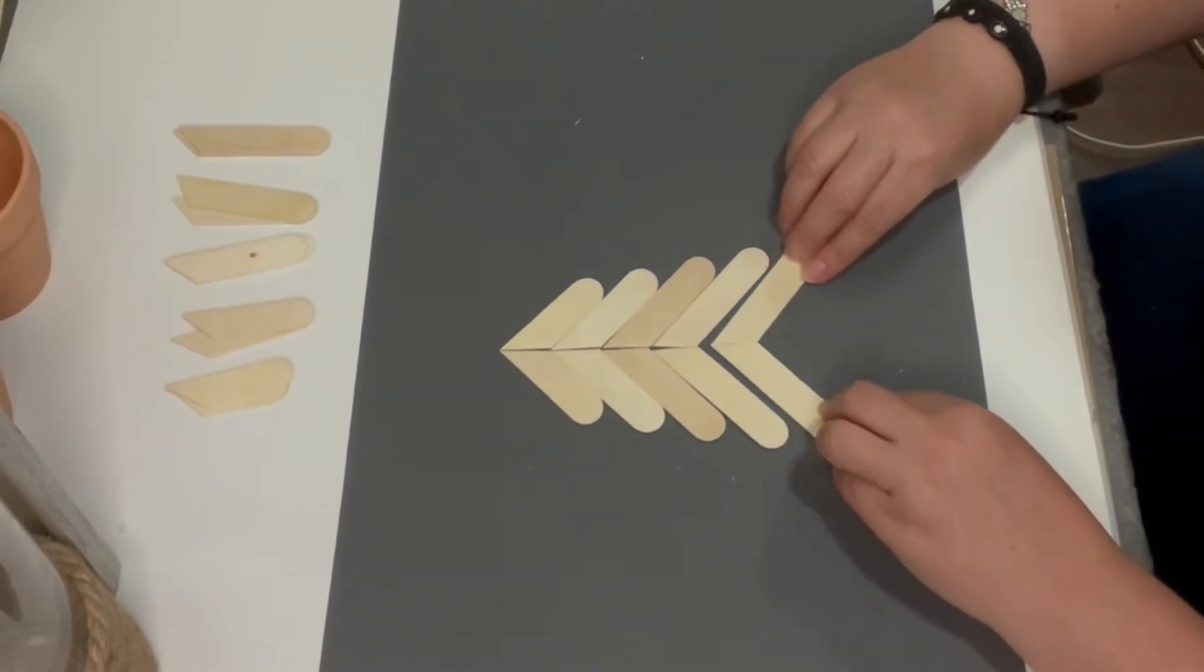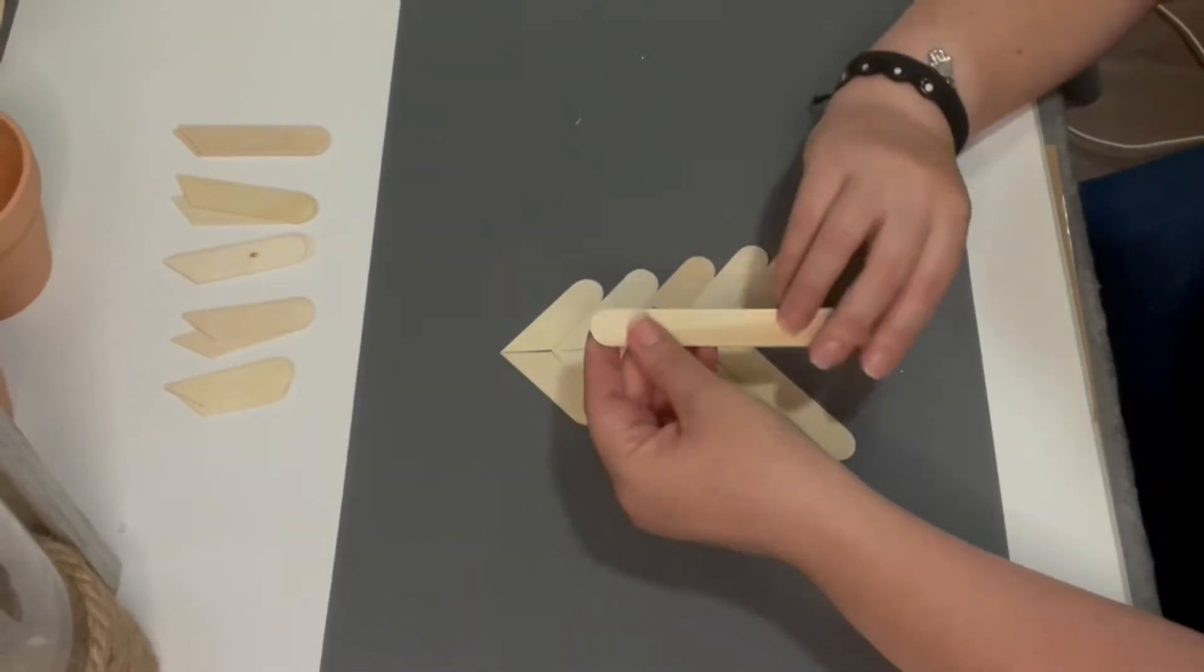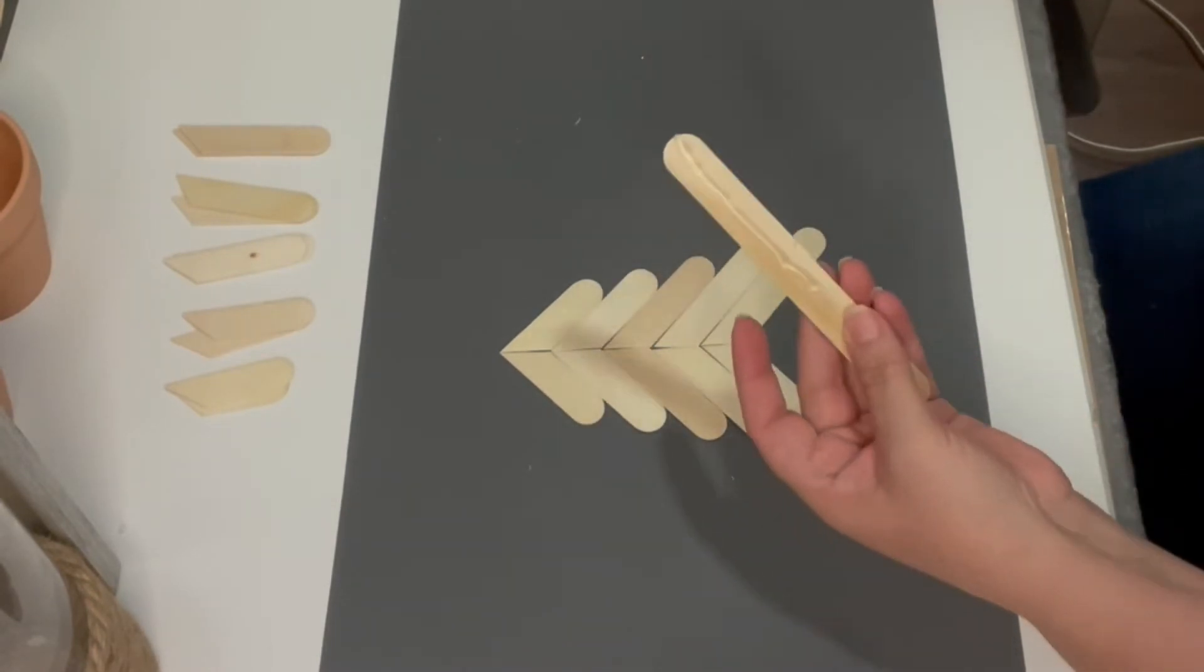To glue the tree as is, I used another popsicle stick. I added a generous amount of glue and then just laid it over the slits, and pretty much that did the trick.